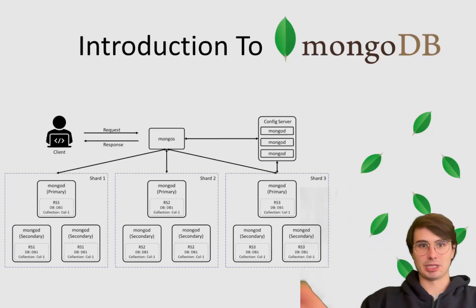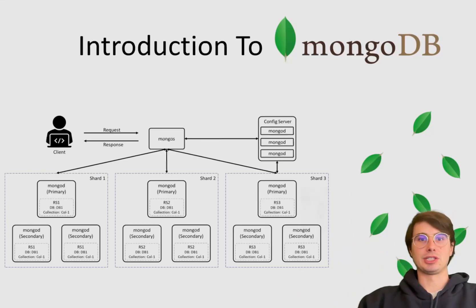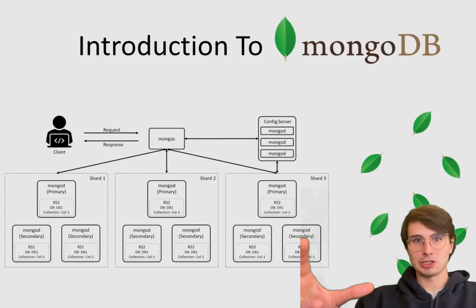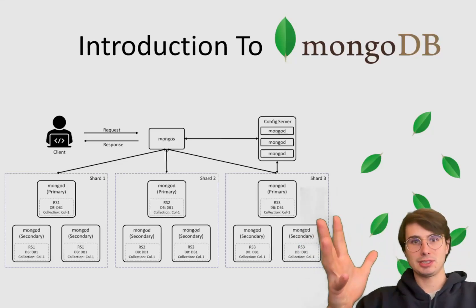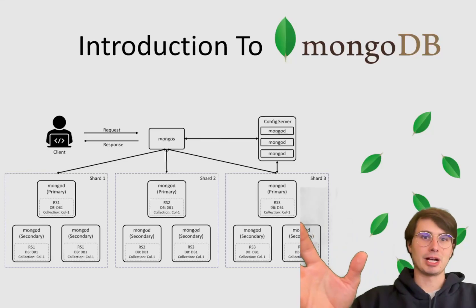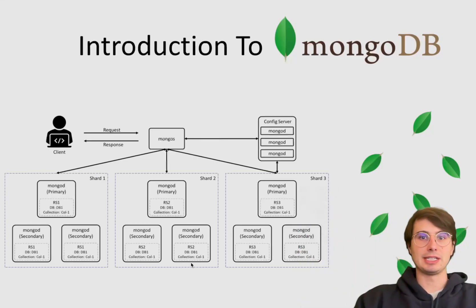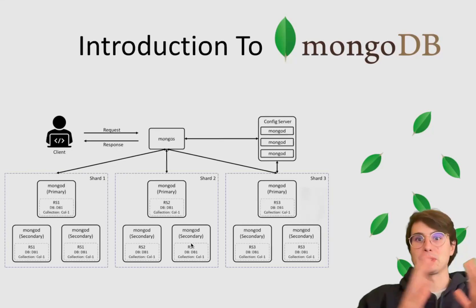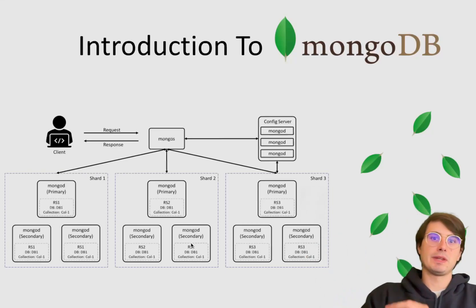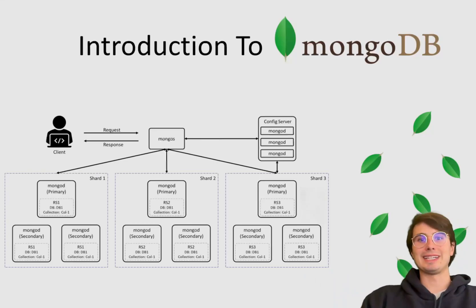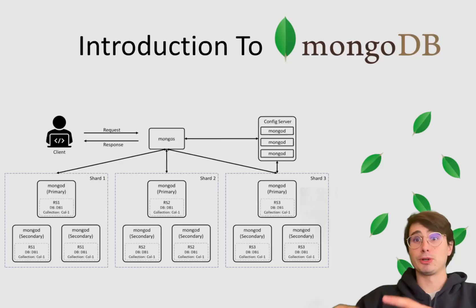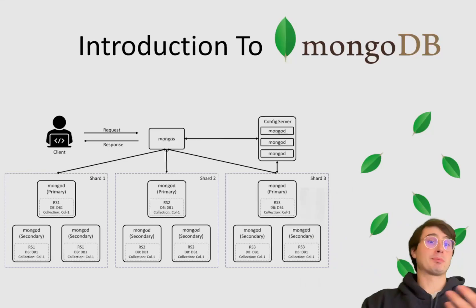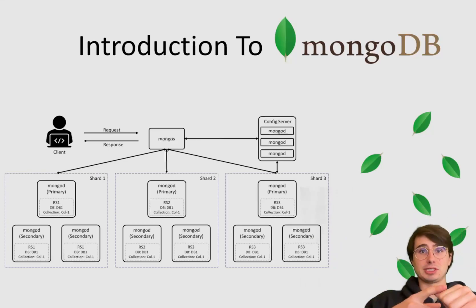You can have completely different key-value pairs in different documents and still store them all in the same location, because each document exists as its own entity. You can still organize them into different groupings to make them easy to query. To summarize: documents contain the actual data in key-value pairs, collections group those documents together, and MongoDB's features include automatic sharding, high availability through replica sets, and horizontal scaling. You query using a JSON-based query language with powerful indexing mechanisms.